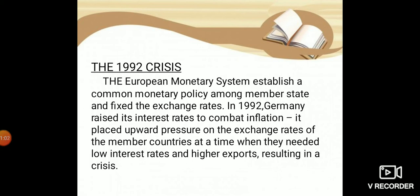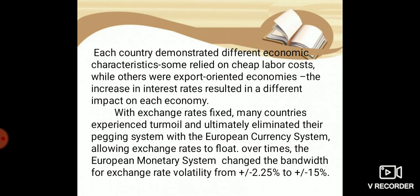The main reasons for the 1992 crisis were: first, Germany raised its interest rate to combat inflation at a time when member countries required low interest rates and higher exports; second, each country had different economic characteristics, so the interest rate increase affected each country differently; and third, these pressures ultimately destabilized the European monetary currency system.